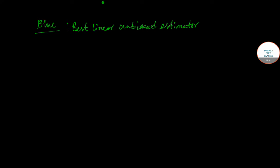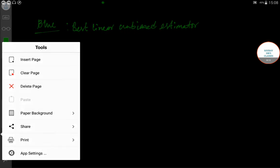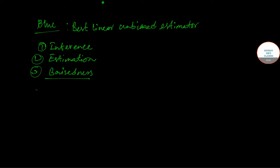Hello, welcome to short observes classes. In this video I am going to cover some of the properties of estimation. In my previous video I have already covered the concept of inference, estimation, and also the concept of biasness, and finally I have also covered the concept of minimum variance.